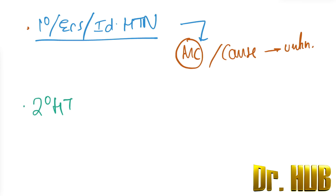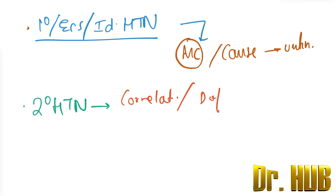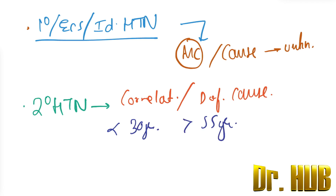Next is secondary hypertension. Secondary hypertension is correlatable and has a definite cause. It usually develops before 30 years of age or after 55 years of age.